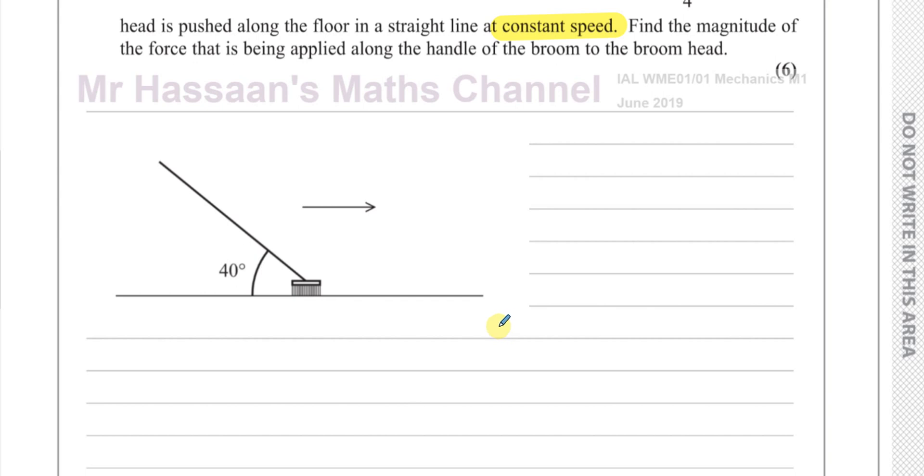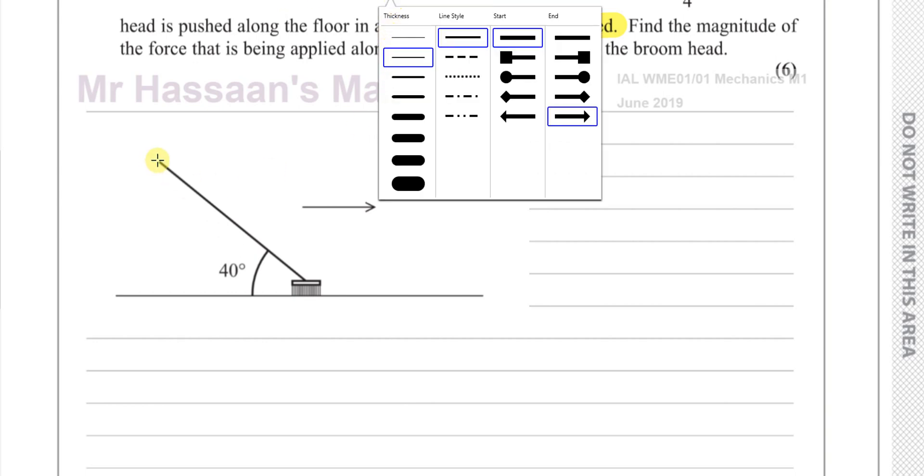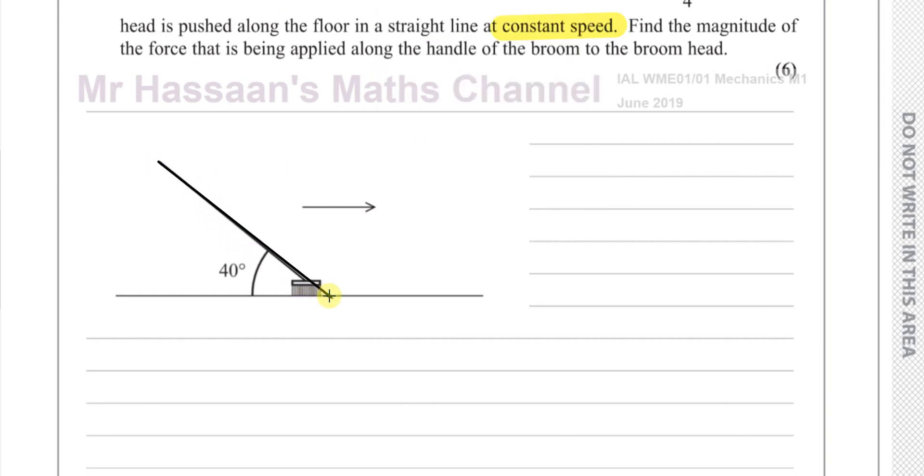So here, what we have is we have this force being applied in this direction. I like to always continue the line of force past the object if it's going towards it. So I'm going to think about this force. I'm going to call this force P, the pushing force. It's acting in this direction. And I know if this angle is 40, this angle will also be 40 because they're vertically opposite, two straight lines together. So that's one force acting on it.